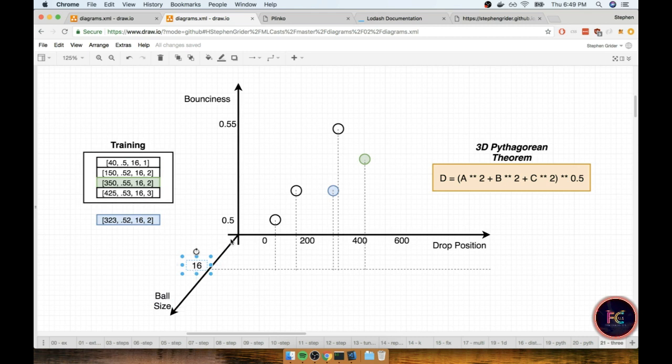But essentially, you can imagine if we had different ball sizes on here, we would want to find our prediction point right here and the three-dimensional distance to all the other points, taking that ball size into account as well. So to get our 3D Pythagorean theorem, all we have to do is add in this new C term right here, where C would be the change, or the distance, along the ball size metric alone.